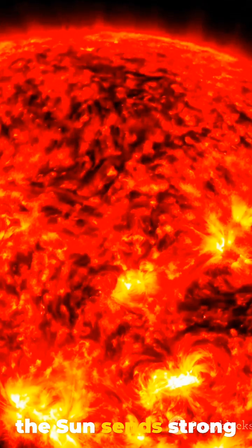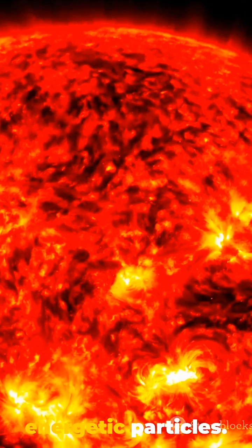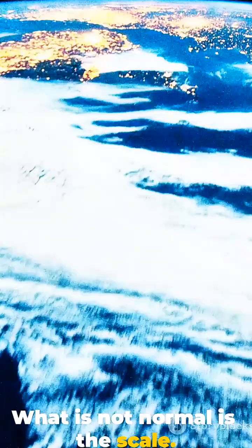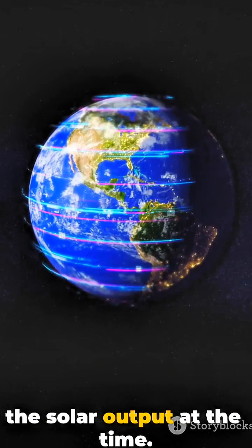The thermosphere expands when the sun sends strong ultraviolet radiation or energetic particles. That part is normal. What is not normal is the scale. The increase is larger than the solar output at the time.